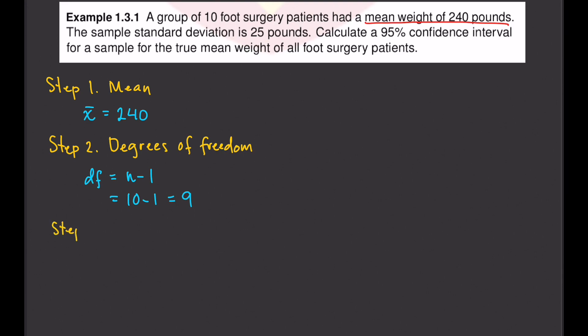Step number three is to find the level of significance. The significance level, denoted as alpha, is 1 minus the confidence level. Our confidence level is 95% or 0.95, so our alpha is 0.05.